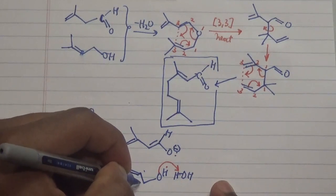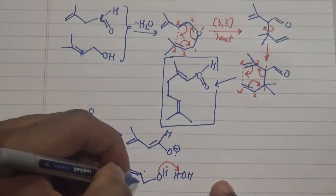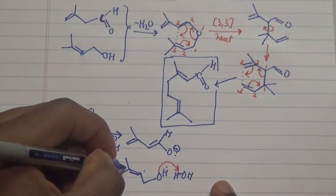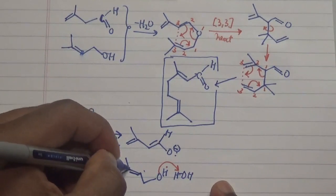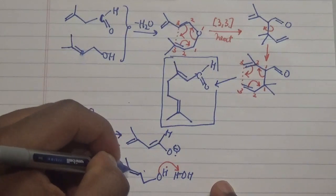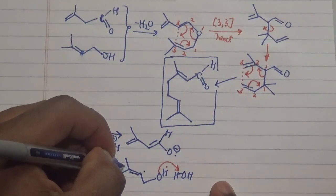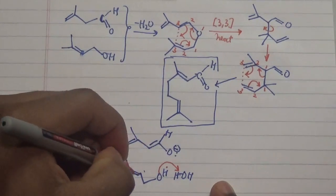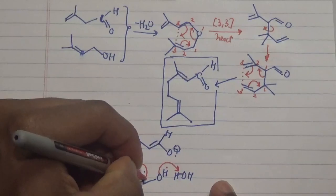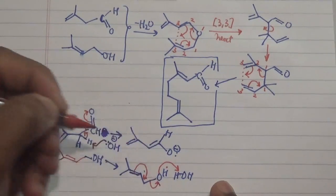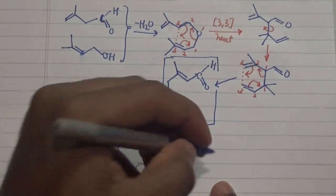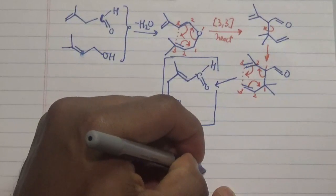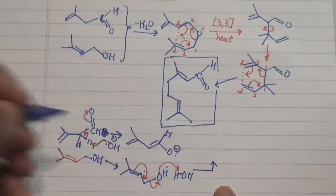So what happens next is that this particular point will have a positive charge. But in order to stabilize this species, we will rather put a positive charge in this particular tertiary carbon because that way we can be able to stabilize this particular positive charge, and that will lead to our double bond moving over here and this actually cleaving off.